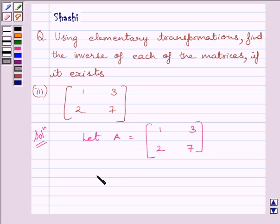Now, to use elementary row transformation method to find the inverse of matrix A, we will write A is equal to IA, where I is the identity matrix.